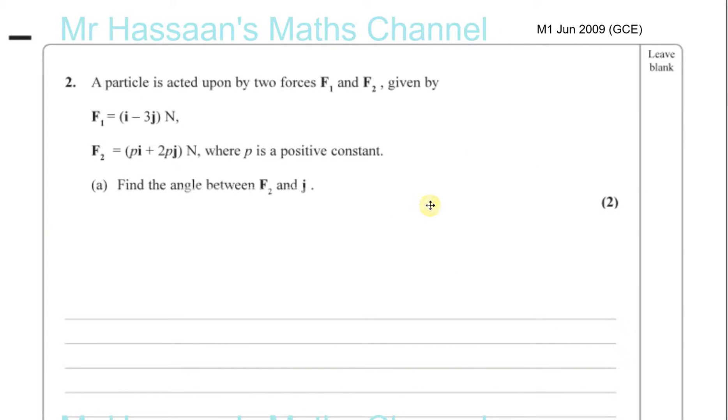Okay, question number two from M1 June 2009, the GCE paper in Excel. A particle is acted upon by two forces, F1 and F2, given by F1 equals I minus 3J Newtons and F2 equals PI plus 2PJ Newtons, where P is a positive constant. Find the angle between F2 and J.